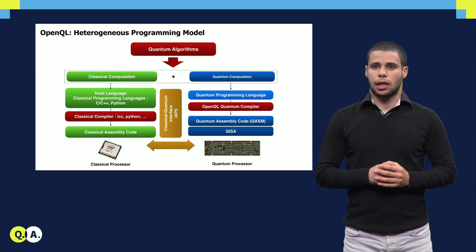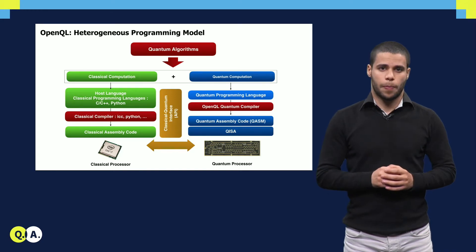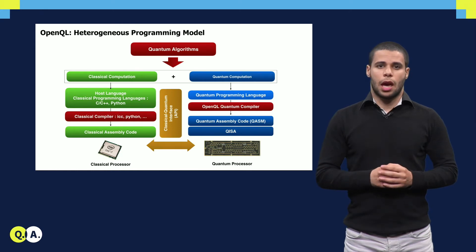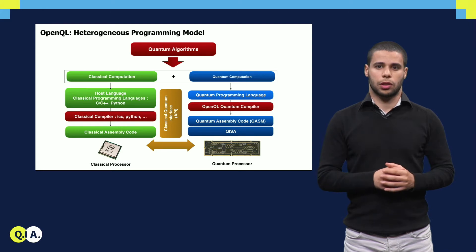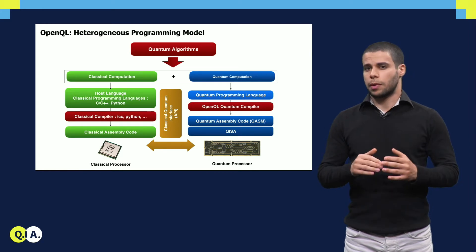Like OpenCL, OpenQL follows a heterogeneous programming model where the quantum computer is considered an accelerator and the general-purpose processor is the host. OpenQL currently supports two high-level languages: C++ and Python.